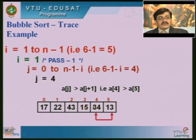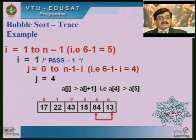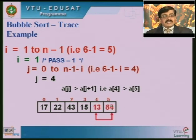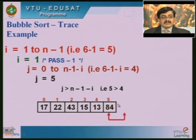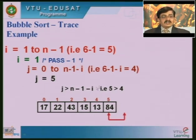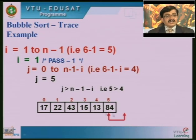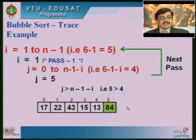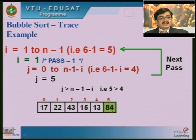When j = 4, a[4]=84 is compared with a[5]=13 — 84 > 13, so we swap; 84 moves to the last position. When j becomes 5, it exceeds the limit (n−1−i = 4), so we exit the j loop. End of pass 1: 84 has taken its proper position. At the end of one pass, one element has taken its proper position.